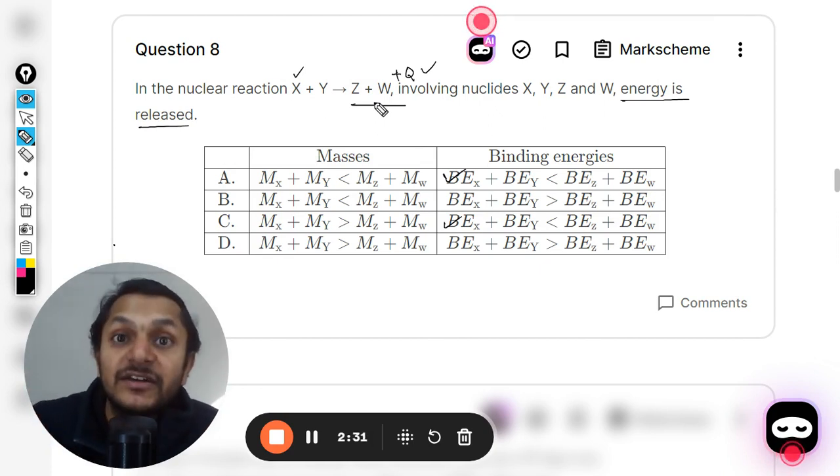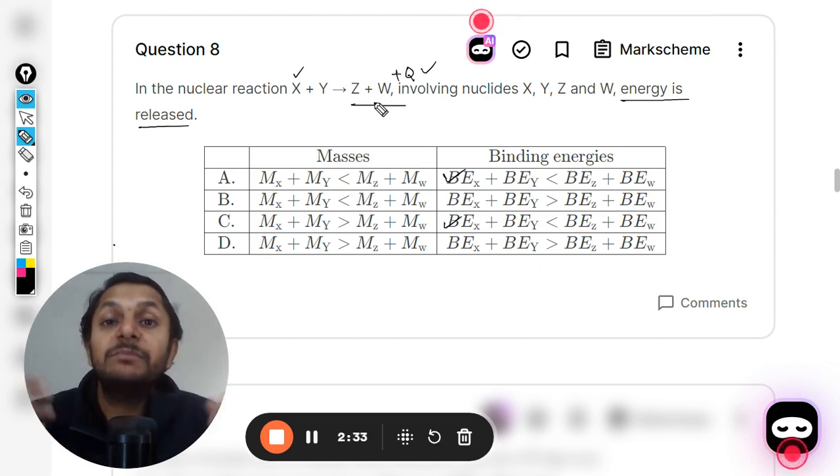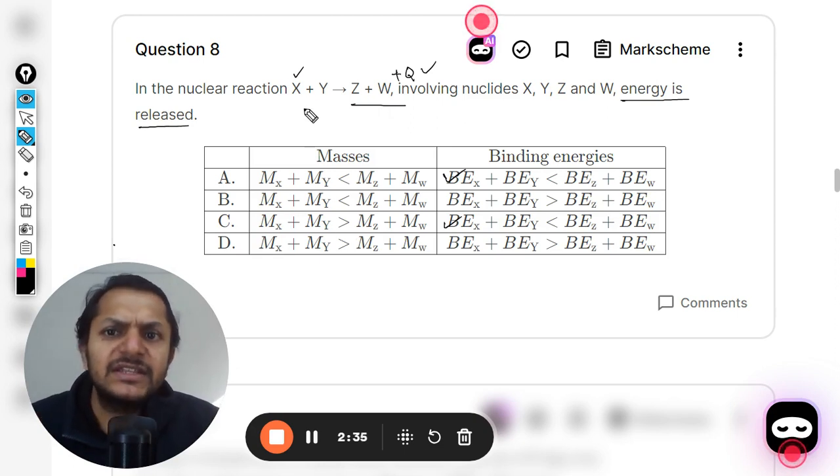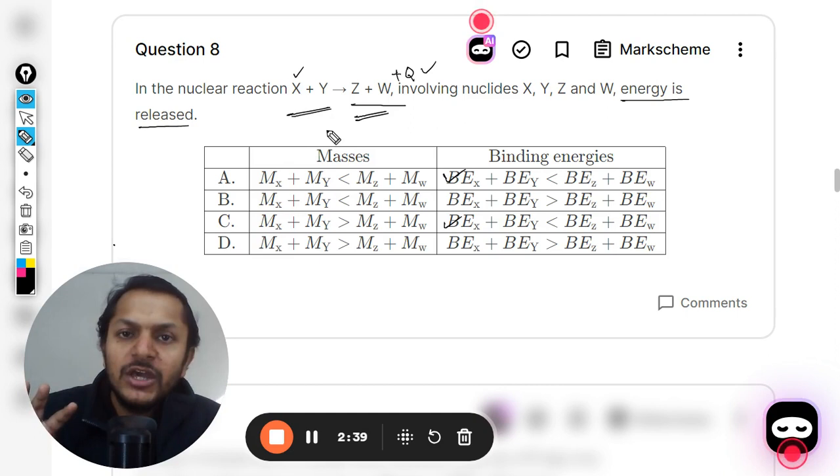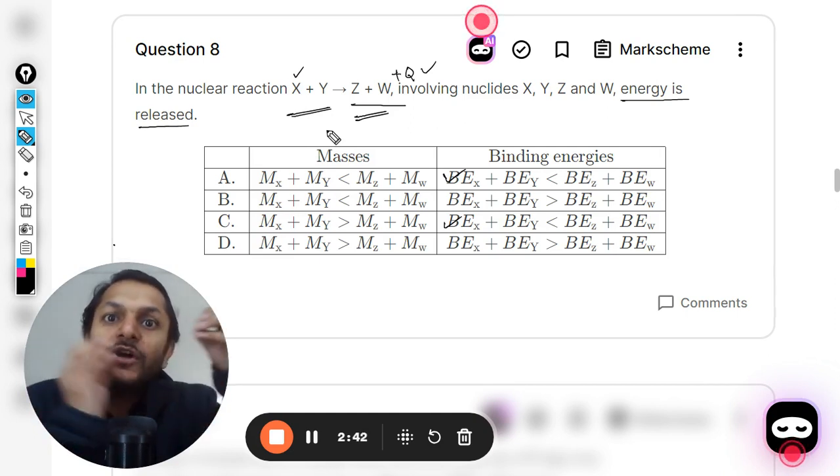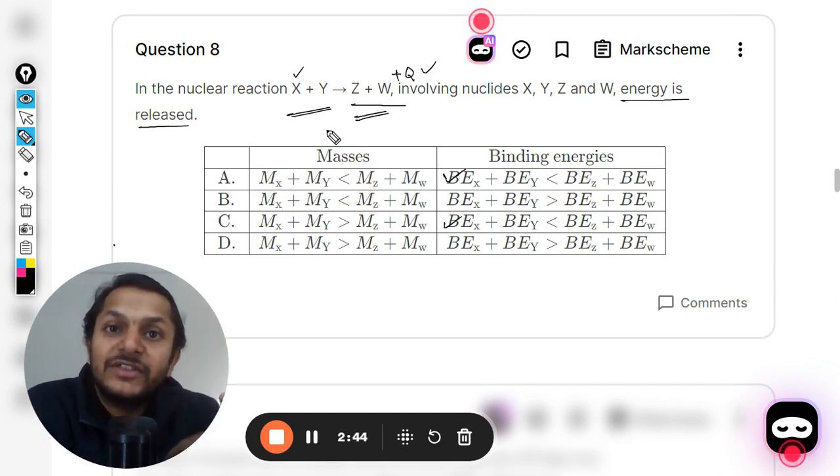It is coming from the mass defect. It means that the mass of X plus Y should be more than the mass of Z plus W, because that mass is now converted into energy, and because of that only more energy is released.